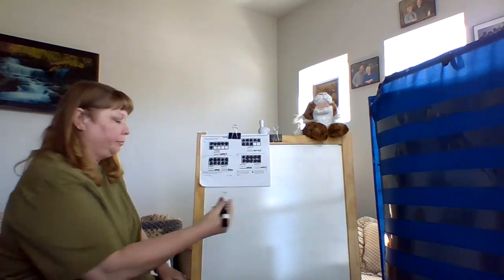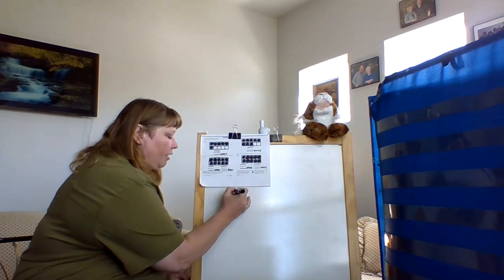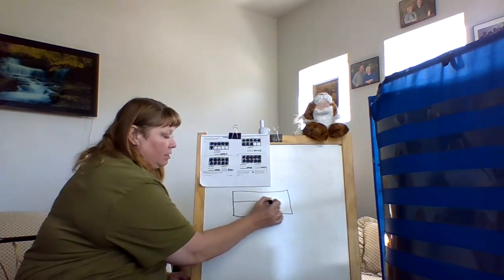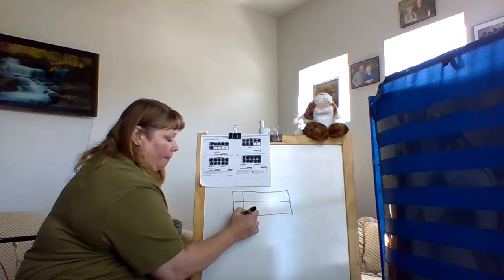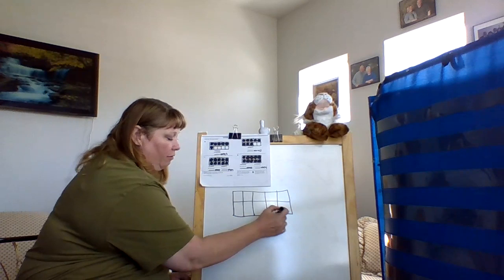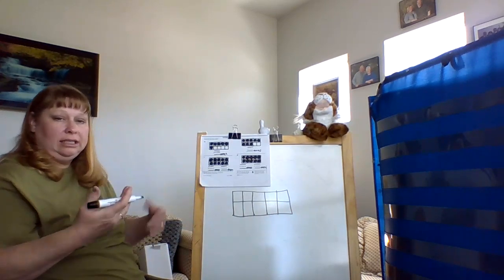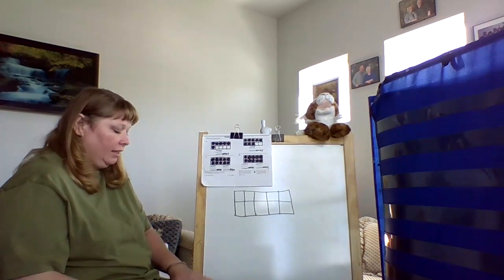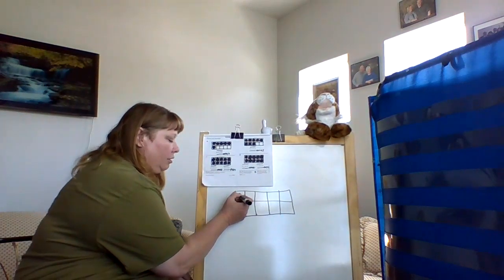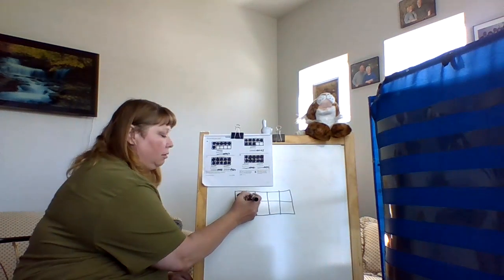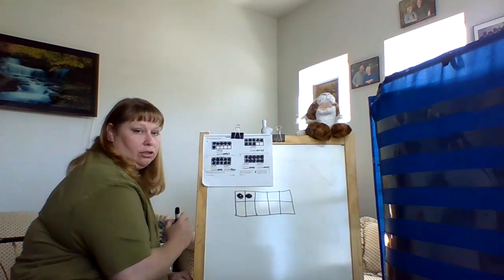All right, today we're going to talk about a 10-frame. A 10-frame has 10 squares in it, so we know if it's all the way full, it's an automatic 10. So as we add a counter: one, two, three, four, five, and all of these are ones. We have right now five ones, six.